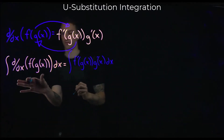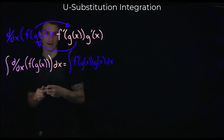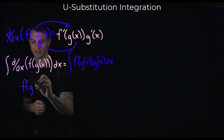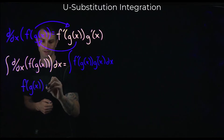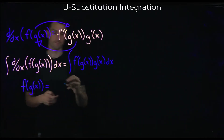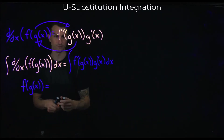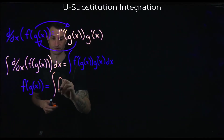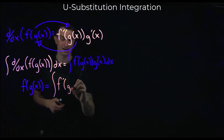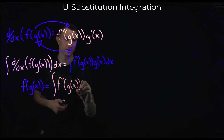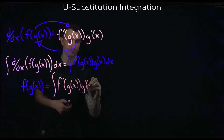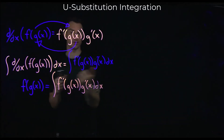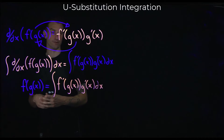By the fundamental theorem of calculus, the integral of the derivative just goes away, and I'm left with f of g of x plus c. So our original function equals the integral of this — and we're going to introduce u-substitution, which is just the backwards direction of the chain rule. The chain rule is the derivative; u-substitution is the integral.